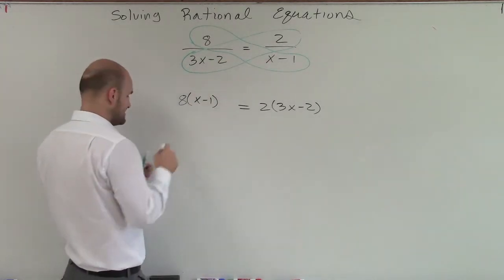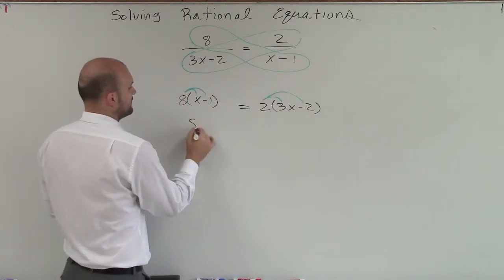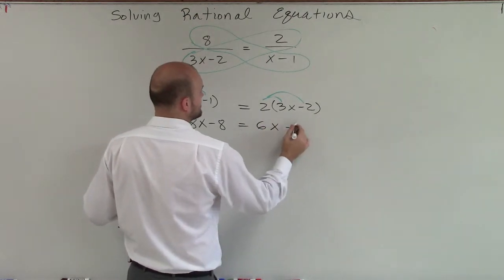Now I still need to apply my mathematical processes, so I need to apply distributive property here. Therefore, I have 8x - 8 equals 6x - 4.